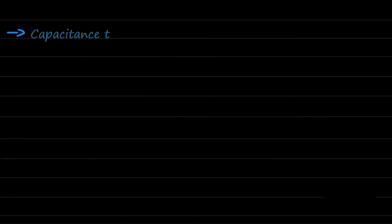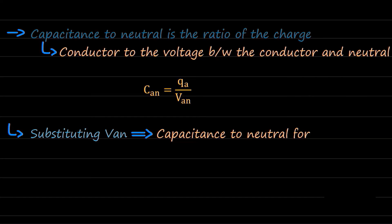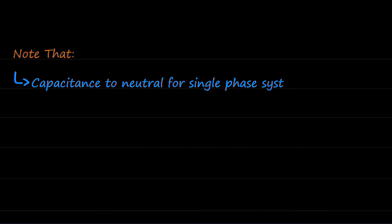Now, since capacitance to neutral is the ratio of the charge on a conductor to the voltage between the conductor and neutral, substituting van we will get the capacitance to neutral for 3 phase system with equal spacing that is, can equal to 2 times pi times k over natural log of d over r. It is to be noted that the capacitance to neutral for single phase system or 3 phase system with equilateral spacing are same.